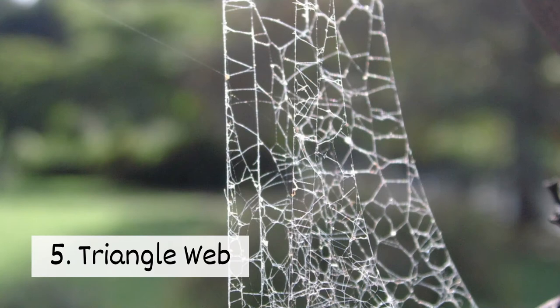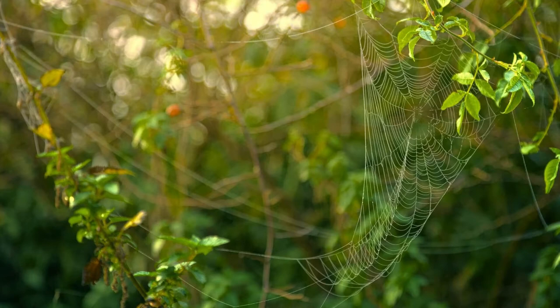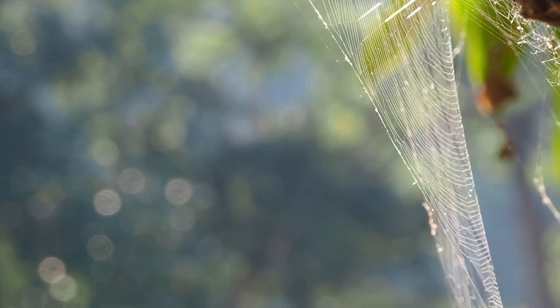5. Triangle Web. Triangle webs look like a slice of pizza with spokes and spirals. These webs have a fuzzy texture instead of being sticky.